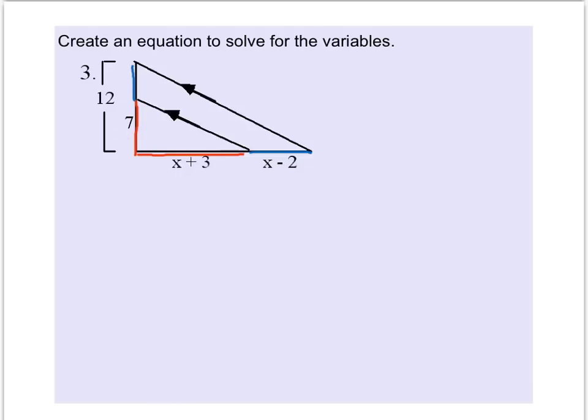Seven and... uh-oh, we seem to be missing a side. Since the entire length is 12 and part of it is 7, I know the remaining piece has to be 5 units long. So now we can set up our ratio.